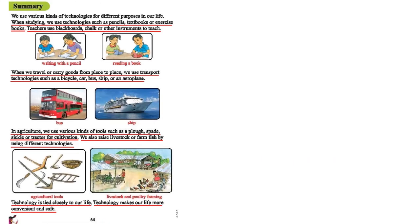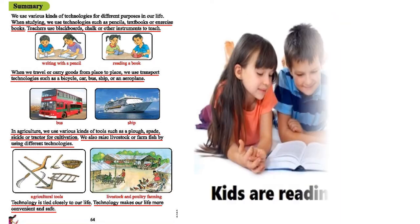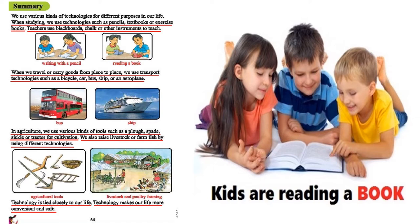Let's go to page number 64. The first paragraph says: we use various kinds of technologies for different purposes in our life. When studying, we use technologies such as pencils, textbooks, or exercise books. Teachers use blackboards, chalk, and other instruments to teach. Nowadays we are fully dependent on various kinds of technologies. When we study we use pens, pencils, calculators, textbooks, and exercise books, and teachers use marker pens and various instruments to teach us better. These are all the tools of study.